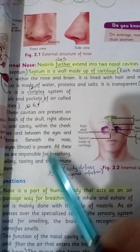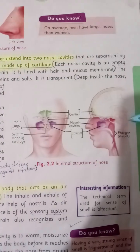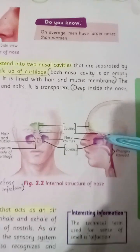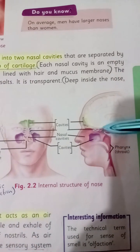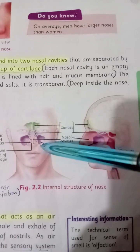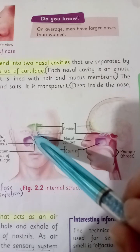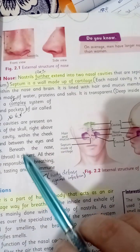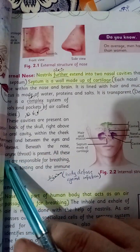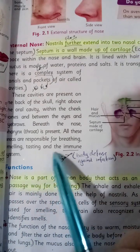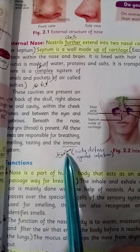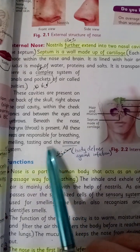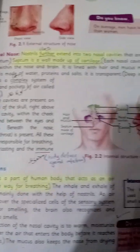These cavities are present on the back of the skull, right above the oral cavity, within the cheek bone, and between the eyes. When you take in oxygen, it is filtered through these cavities. Beneath the nose, the throat is present. All these areas are responsible for breathing, smelling, tasting, and the immune system — which defends the body against disease.